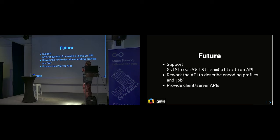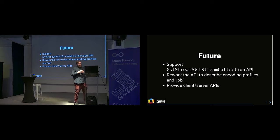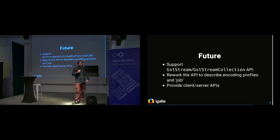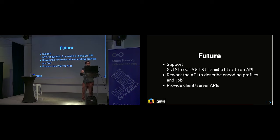In the future we want to use the GstStream and GstStreamCollection API so you can map input streams to output streams — saying I want this stream encoded in this format, that stream in that format. Currently this can be handled at the GST Transcoder level but it's not clean; with GstStreams it will be much cleaner. We also have ideas about reworking the API to easily send transcoding jobs to a transcoding server. If people are interested, we are very happy to work with you.